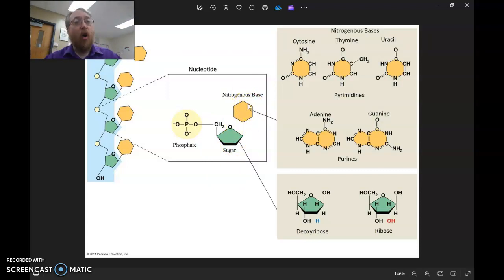Nitrogenous bases are rings of nitrogen and carbon. And you can see a lot of options for those over here, five different options. But it doesn't matter which option it is, it'll have nitrogen and carbon atoms arranged in a ring. Same thing over here.